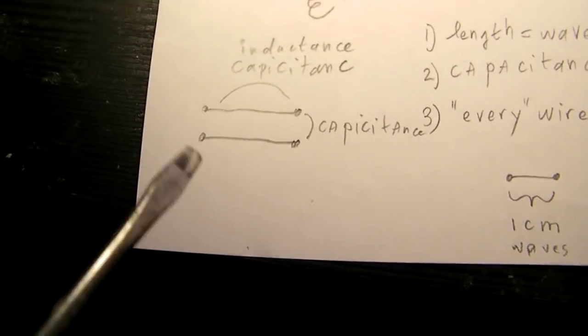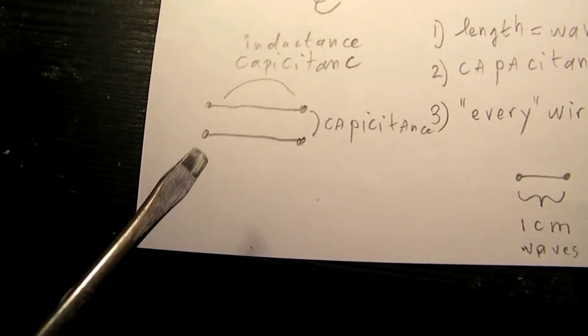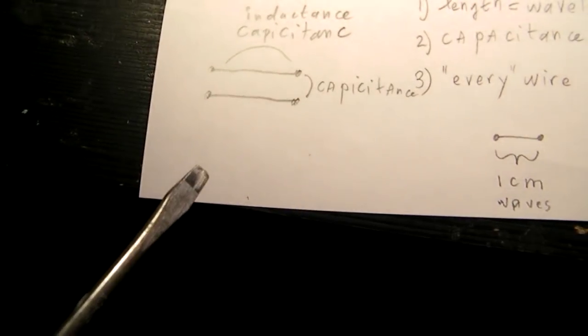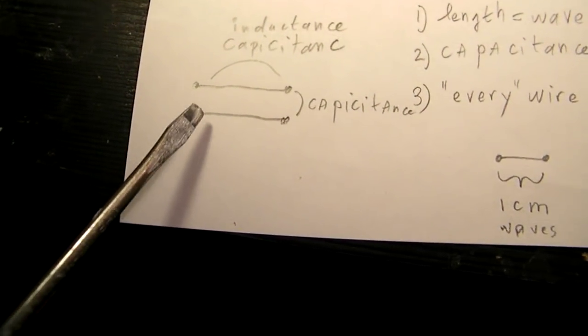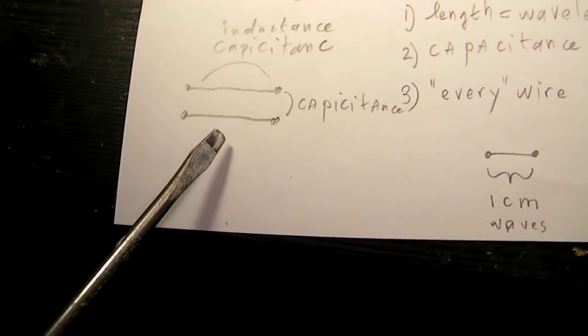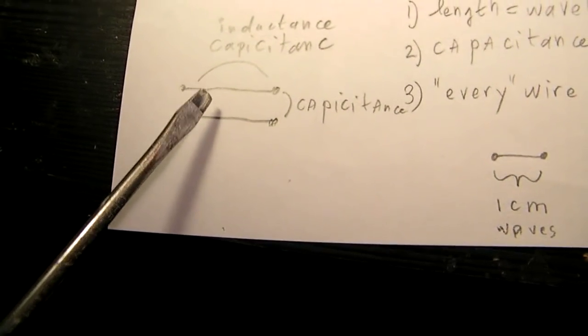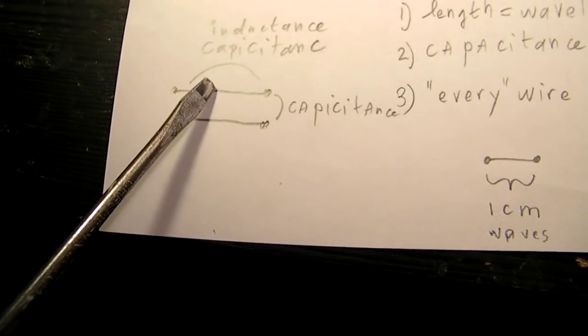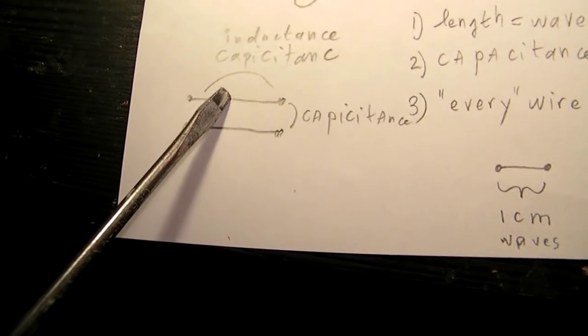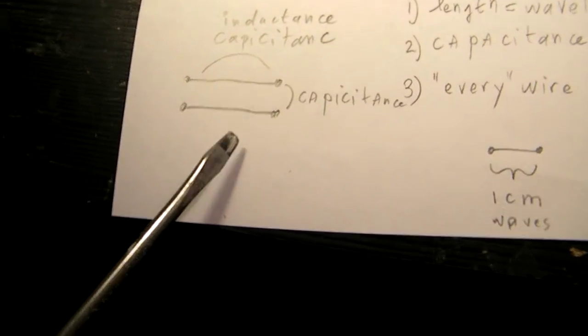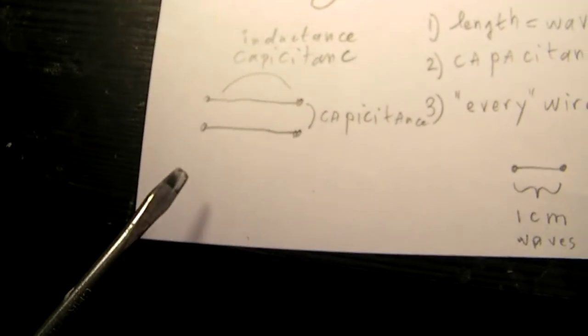And consider, for instance, two wires over a length of 10 kilometers with a certain distance. There will surely be a very substantial effect from the capacitance between this wire and this wire. And this wire can also be the shielding.